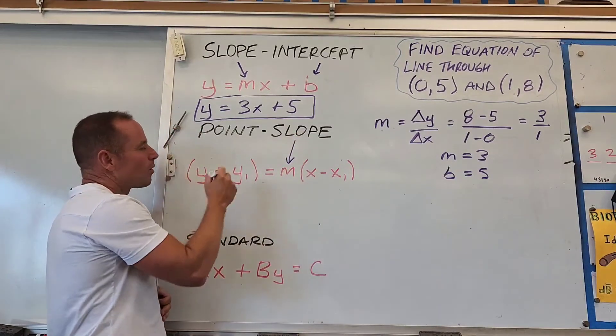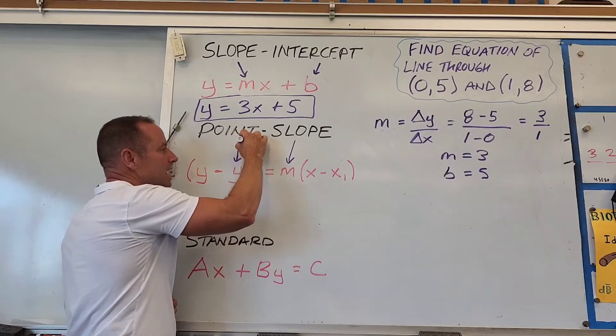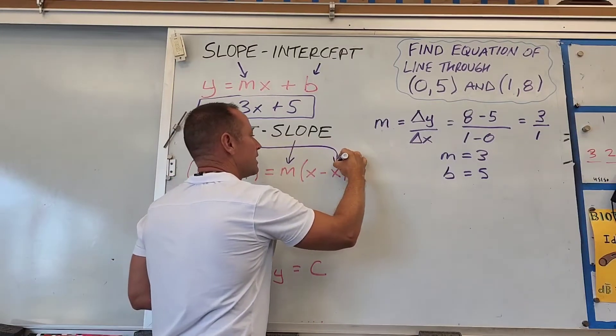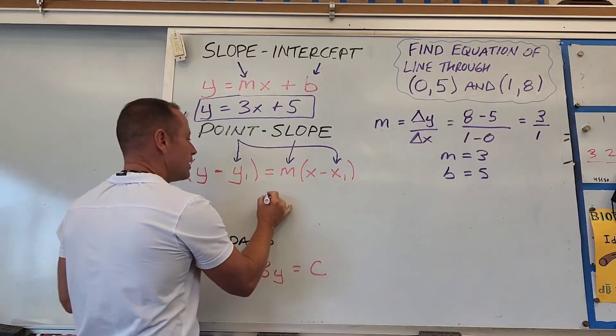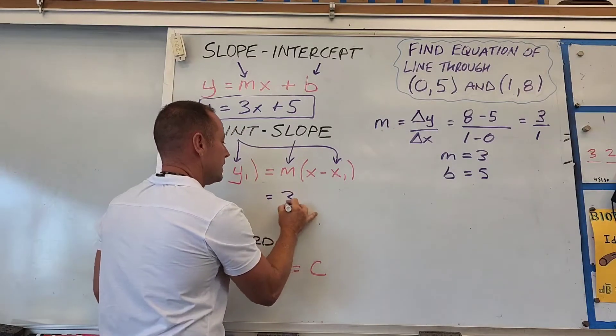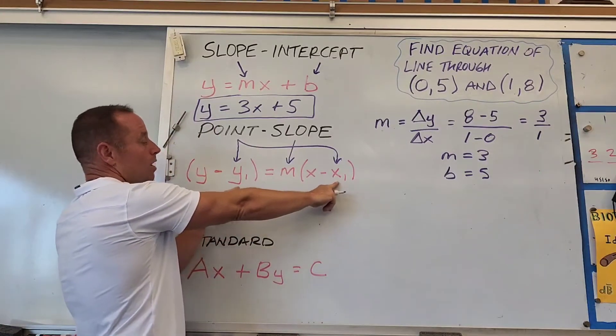It's called point-slope because the coordinates x₁ and y₁ are any point on the line. From our work, we know the slope is 3, and we just need to put in values for x₁ and y₁.